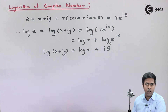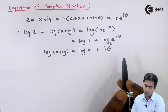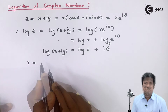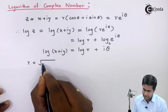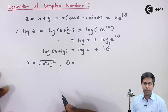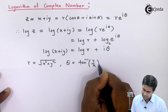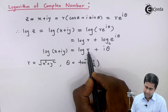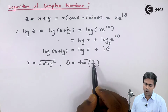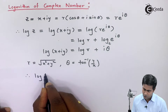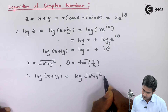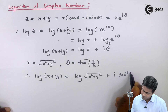Now we also have to find the values of r and theta. We have seen that r is the modulus, represented by the formula root of x squared plus y squared. Similarly, theta is called the amplitude, represented by the formula tan inverse of y by x. So substituting these values, we get the formula: log of x plus iy equals log of root of x squared plus y squared plus i tan inverse of y by x.